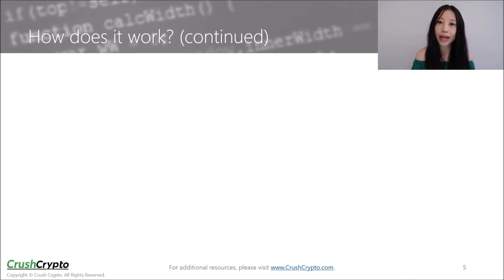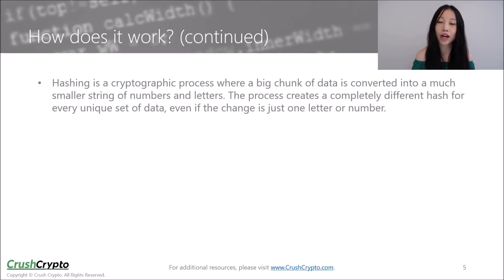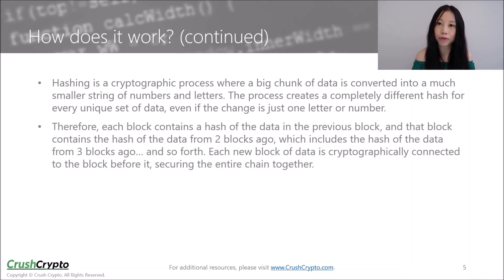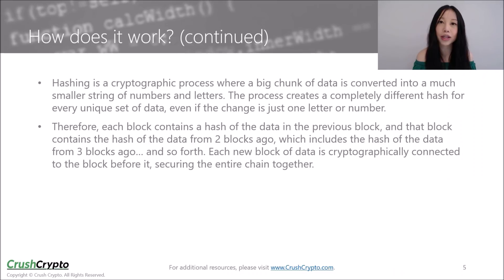As a quick overview, hashing is a cryptographic process where a large amount of data is converted into a much smaller string of numbers and letters. This process creates a completely different hash for every unique set of data, even if the change is just one letter or number. Therefore, each block contains a hash of the data in the previous block, and that block contains the hash of the data from two blocks ago, which includes the hash of the data from three blocks ago and so on. Each new block of data is cryptographically connected to the block before it, securing the entire chain altogether.